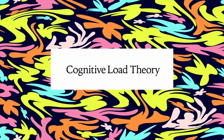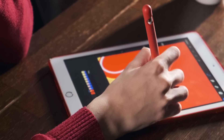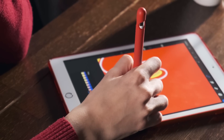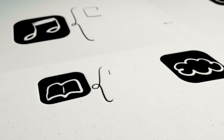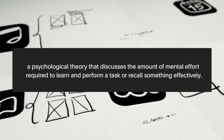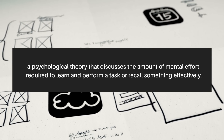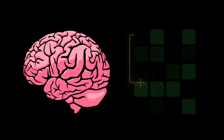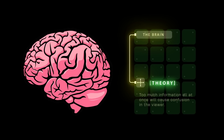We're now going to look at a very important graphic design theory and how you can use it on your designs. The theory is called the Cognitive Load Theory. The theory states that when designing anything — whether it's social media posts, a website, or whatever — it's important to consider the cognitive load on the viewer's mind. If there's too much information at once, the viewer might feel overwhelmed or confused and won't retain any of the information presented.